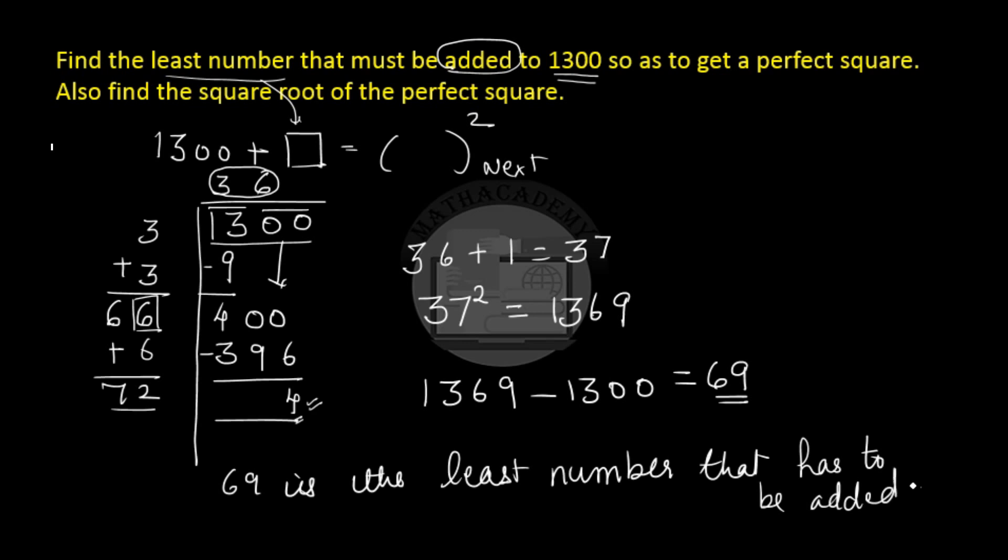So I hope this is clear to everyone. We found the square root of 1300 using the division method. We got the quotient as 36. We took one more than 36 which is 37. We found the square of 37 which is 1369. So we know that to 1300 we need to add 69 to get a perfect square number which is 1369 and the square root of that perfect square number is 37.